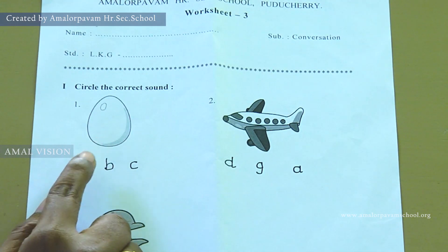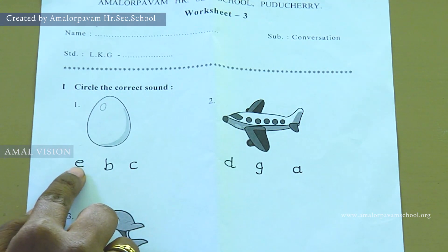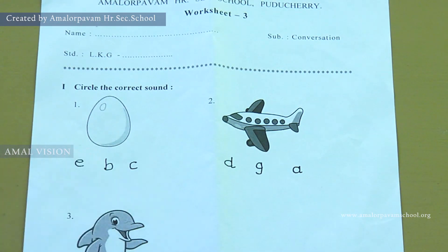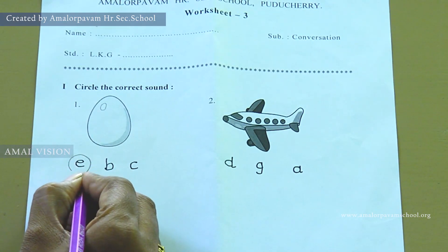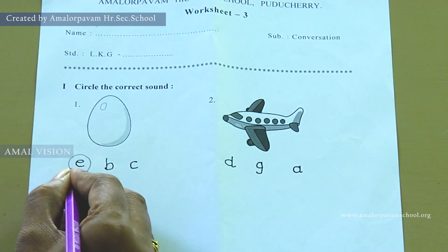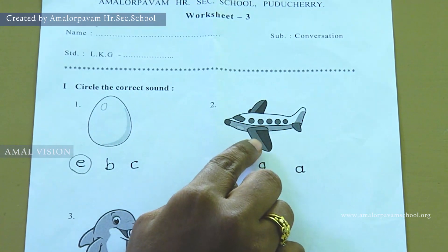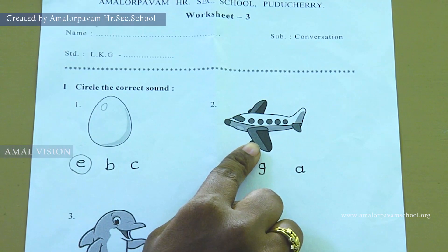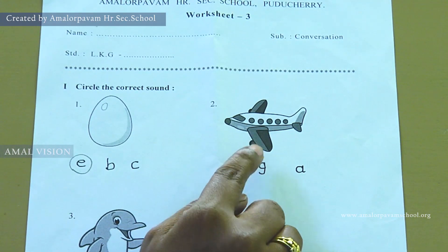Look at these three sounds. Where is the sound A? See here, it is. Circle the sound A. Take your pencil, circle neatly. Now keep finger in two. What is this? This is a dolphin. Dolphin — the. Circle the sound 'the'.